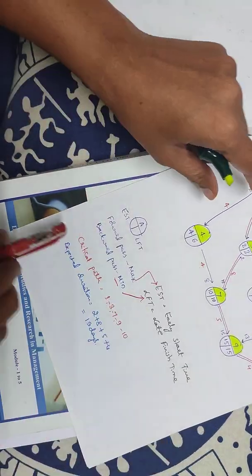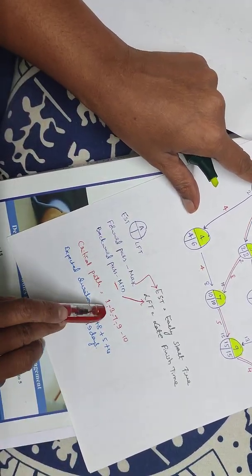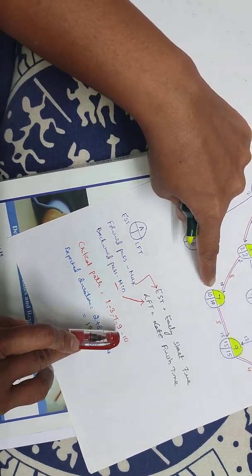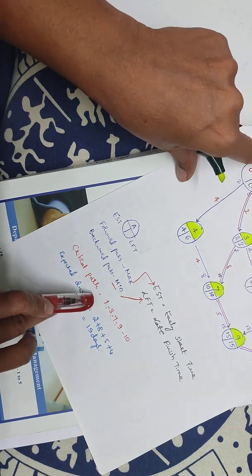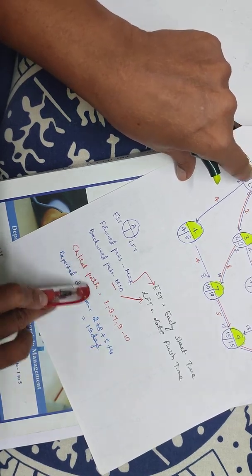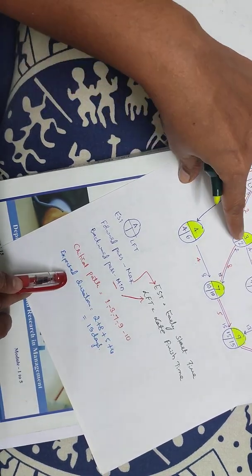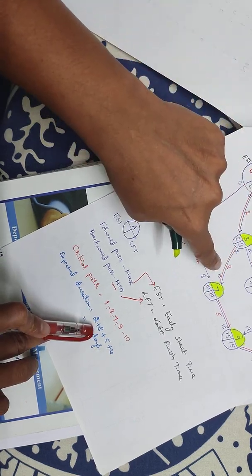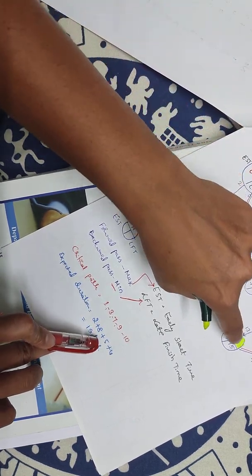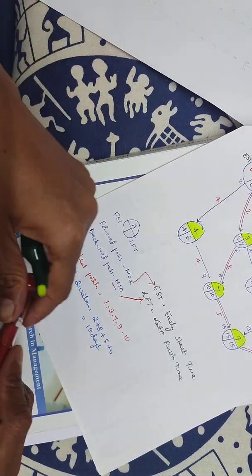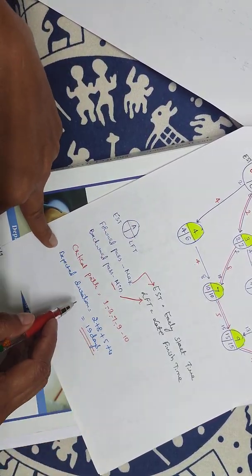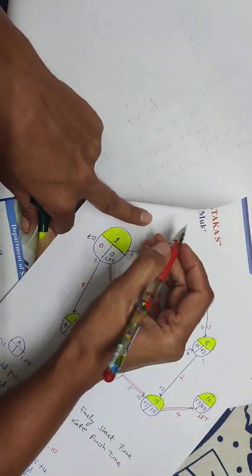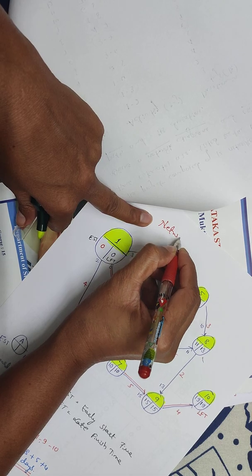Now we'll add the critical path: 1 to 3, 3 to 7, 7 to 9, 9 to 10. This is the critical path. Adding the durations: 1 to 3 is 2 days, plus 3 to 7 is 8 days, 7 to 9 is 5 days, 9 to 10 is 4 days. Total is 19 days. This is the expected duration, critical path, and network diagram for this problem.